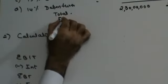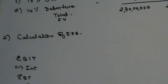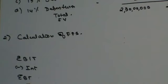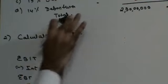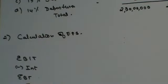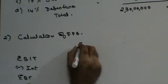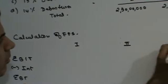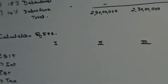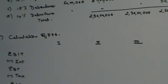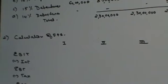In capital structure problems, the number of shares is directly given as 4 lakh shares, so I don't need to calculate from face value. EBIT is not directly given here. The company's shares are traded at 25 per share, and it is expected the company will earn a post-tax profit of 20 lakhs.